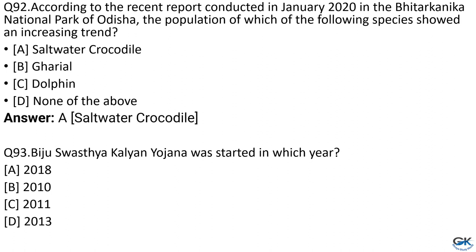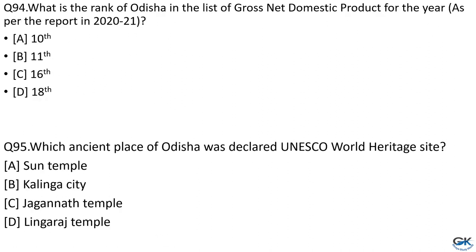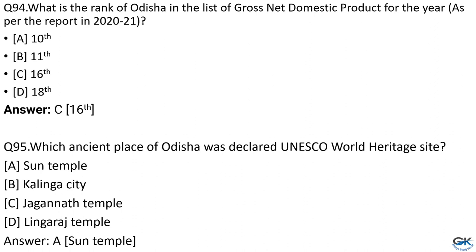Question No. 93: Biju Swasthya Kalyan Yojana was started in which year? Option A: 2018. Option B: 2010. Option C: 2011. Option D: 2013. The answer is Option A, 2018. Question No. 94: What is the rank of Odisha in the list of gross state domestic product? The answer is Option B, 11th. Question No. 95: Which ancient place of Odisha was declared a UNESCO World Heritage Site? Option A: Sun Temple. Option B: Kalinga City. Option C: Jagannath Temple. Option D: Lingaraj Temple. The answer is Option A, Sun Temple.